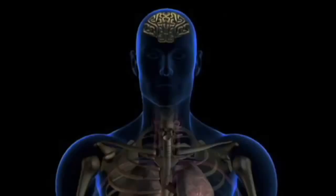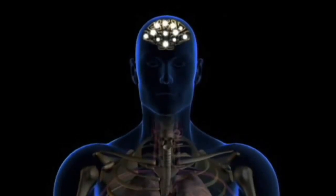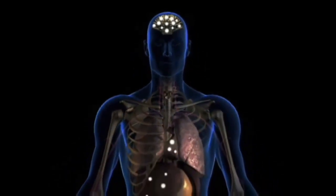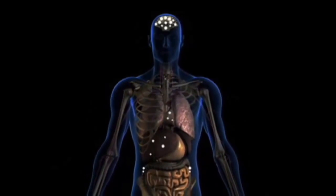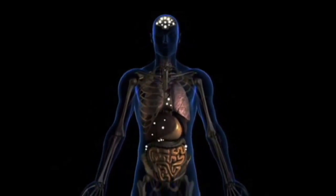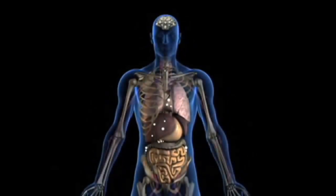One called the CB1 receptor, mainly in the brain, and the other is the CB2 receptor, which is mainly in cells of the immune system. The CB1 receptors are extremely abundant in the brain, but they're also found all over the body in the major organs, the heart, the liver, kidneys, and pancreas. After finding all these locks that accepted the cannabis key, researchers made the next big discovery.